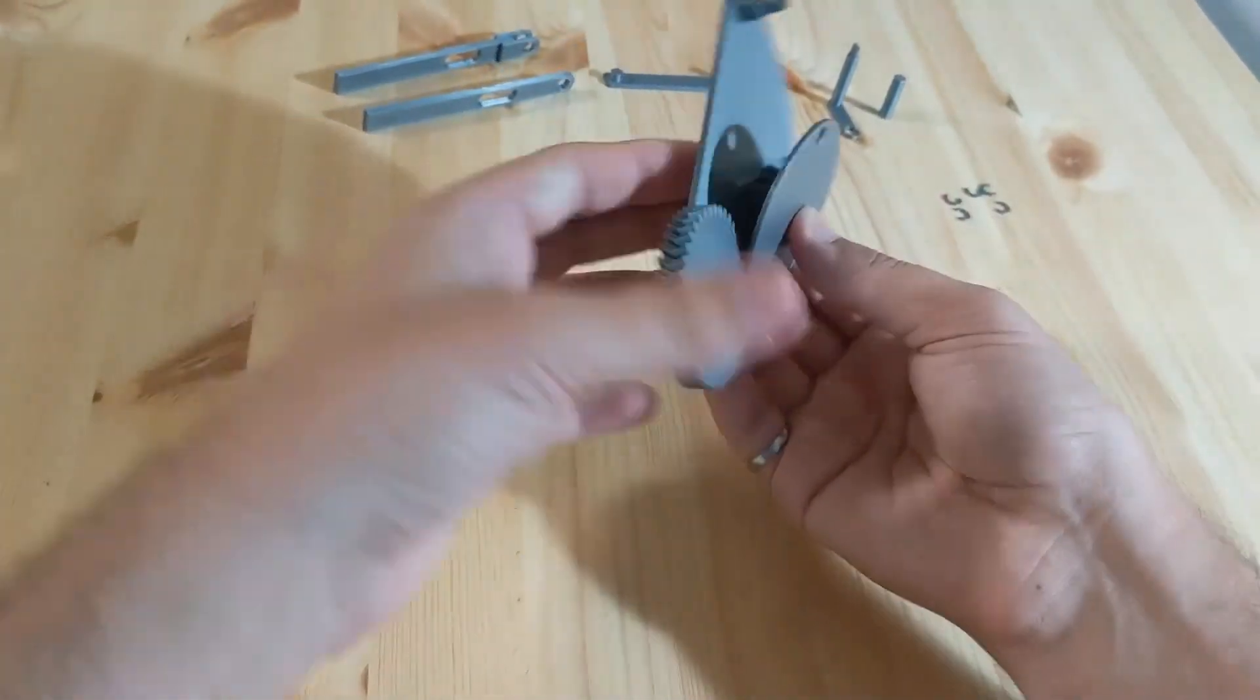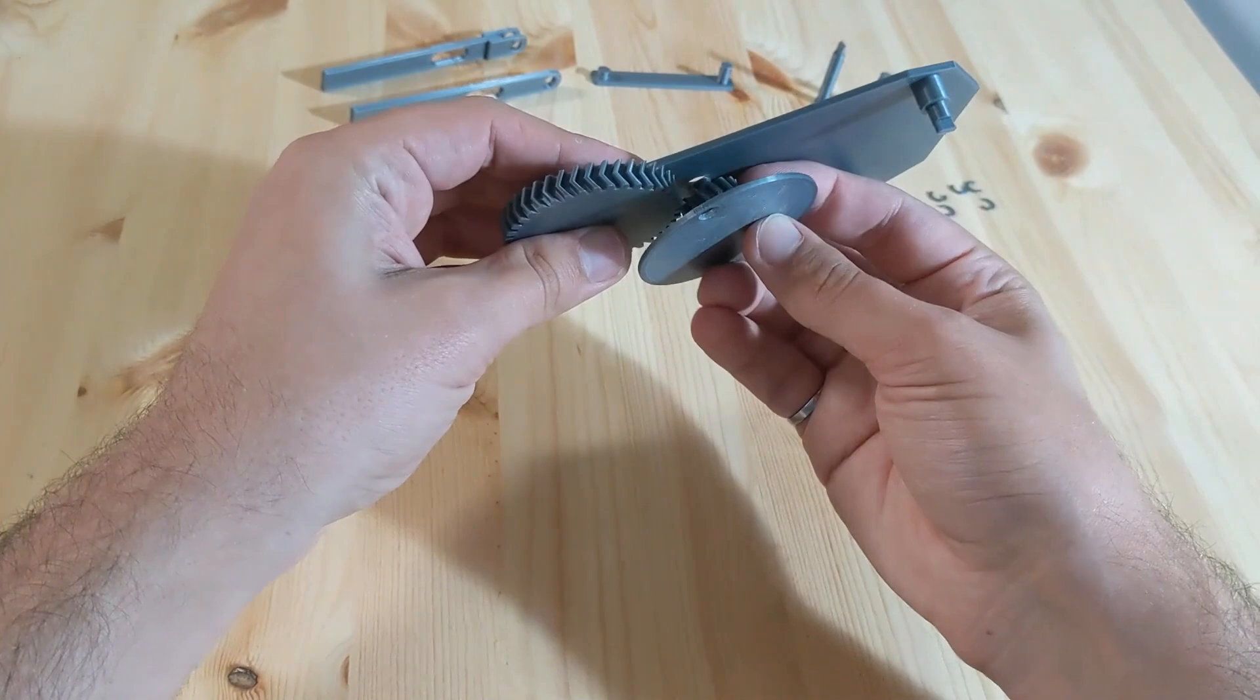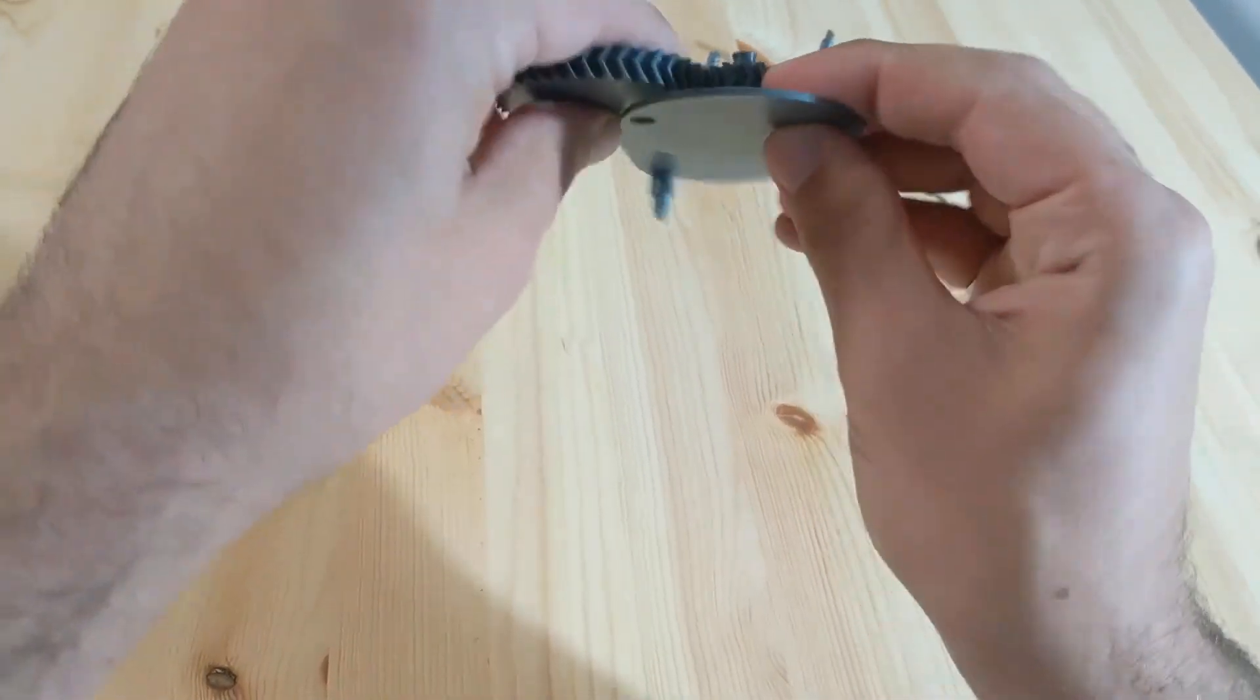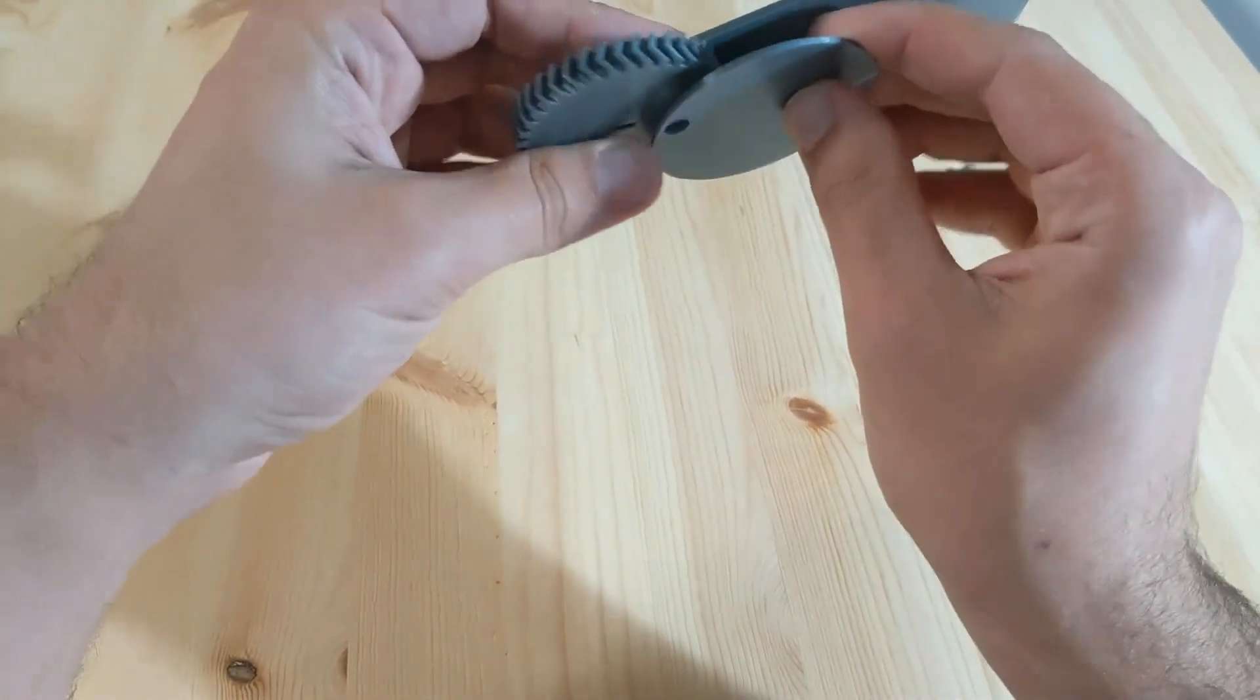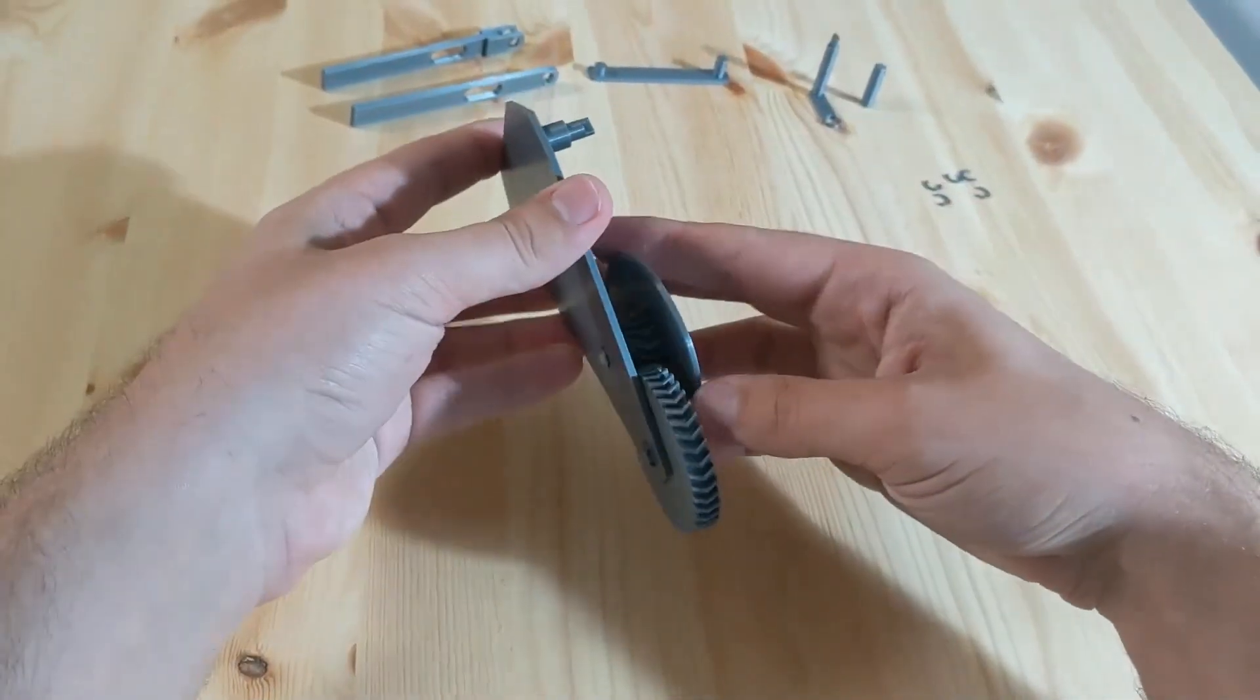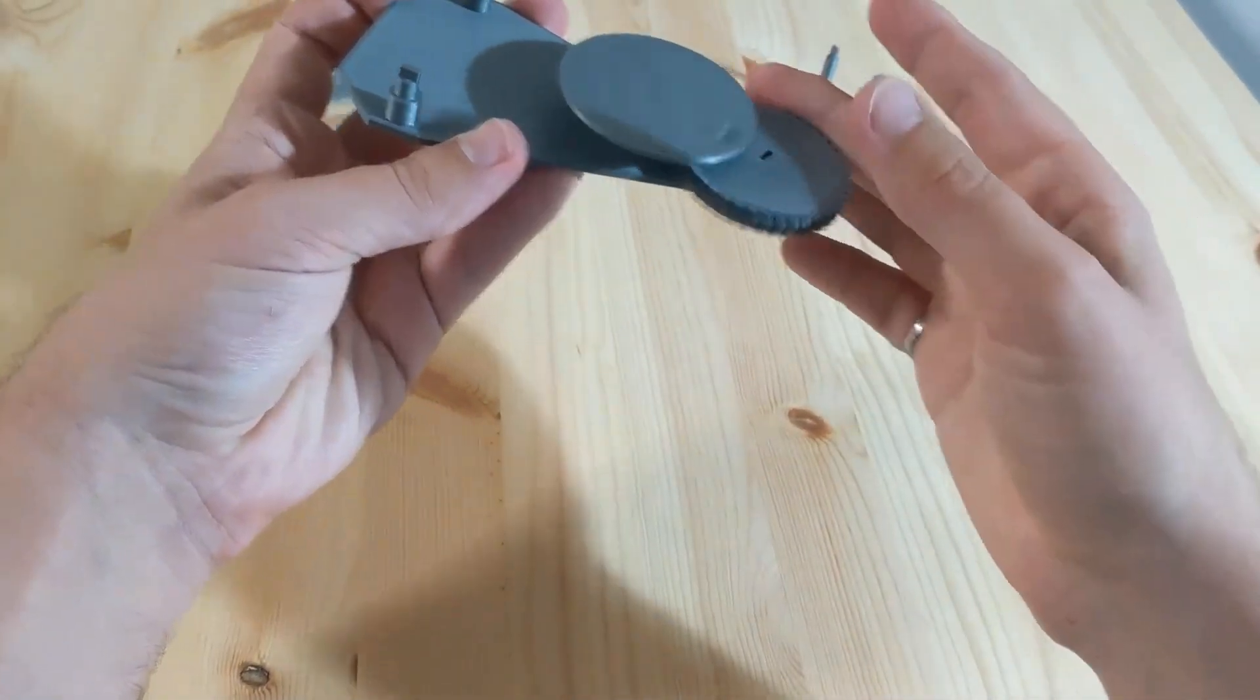We then take our 13-tooth gear, make sure we slot it in. You might need to bend the back plate a little bit, because the teeth are going to mesh nice and tightly. So bend it back a little bit, slot it in there, and you'll see that the gears rotate nicely together.